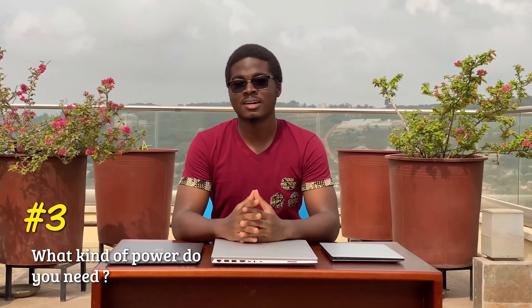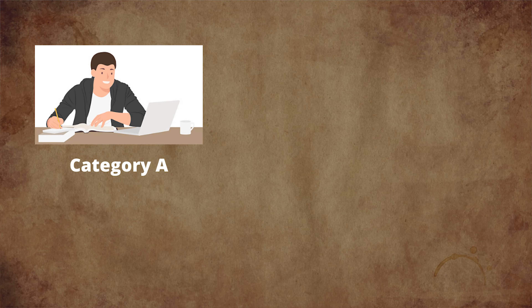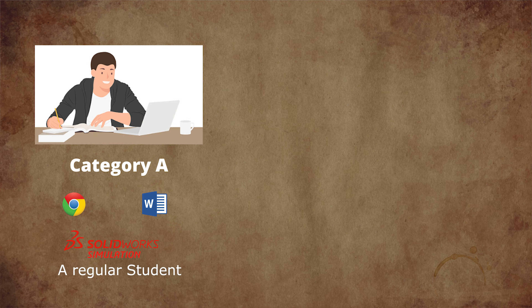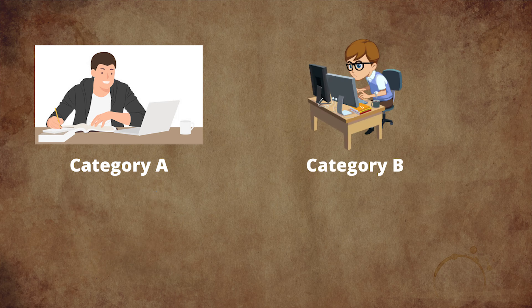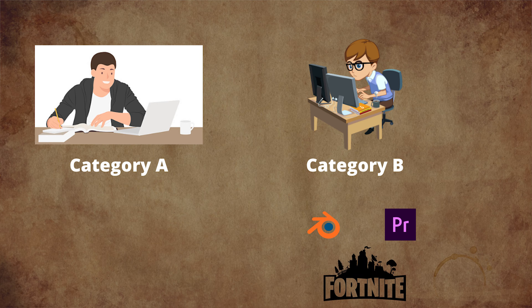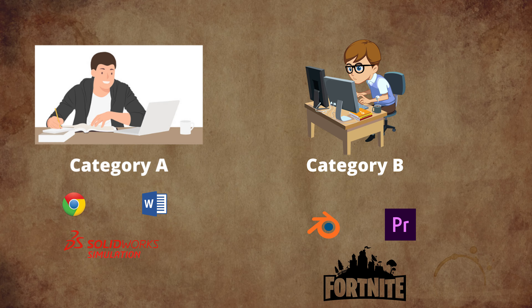The third question is: what kind of power do you need? I'd like you to categorize yourself into two groups. Category A is for students or people who don't do too much intensive stuff — basic browsing, light gaming, everyday tasks. Category B is for those who run Premiere Pro, Blender, or do heavy gaming and other intensive work. Place yourself in one of these categories as we move on.